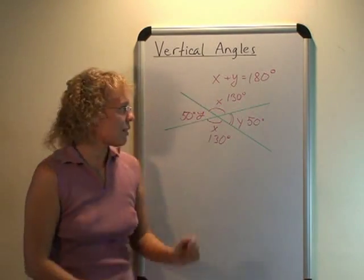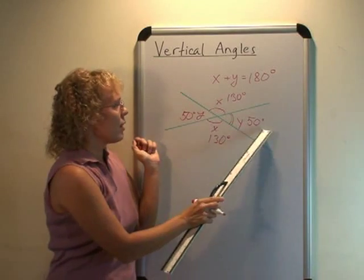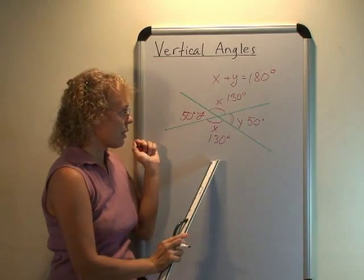So what we get from this is that vertical angles are equal. This and this angle are equal, and this and this angle are equal.